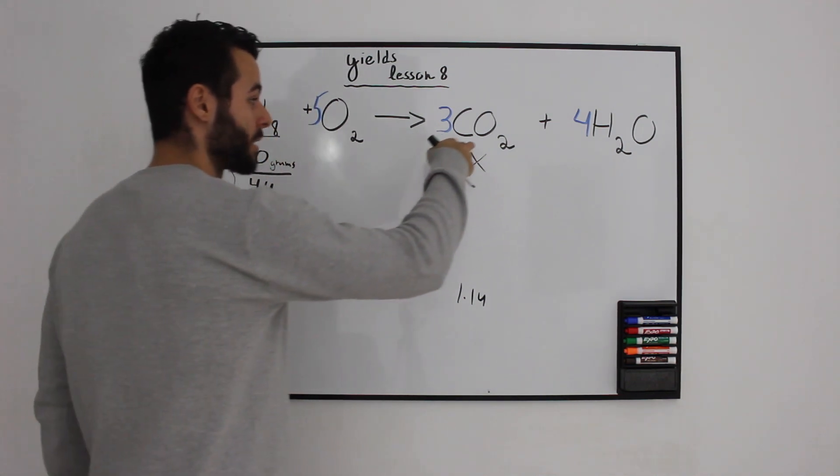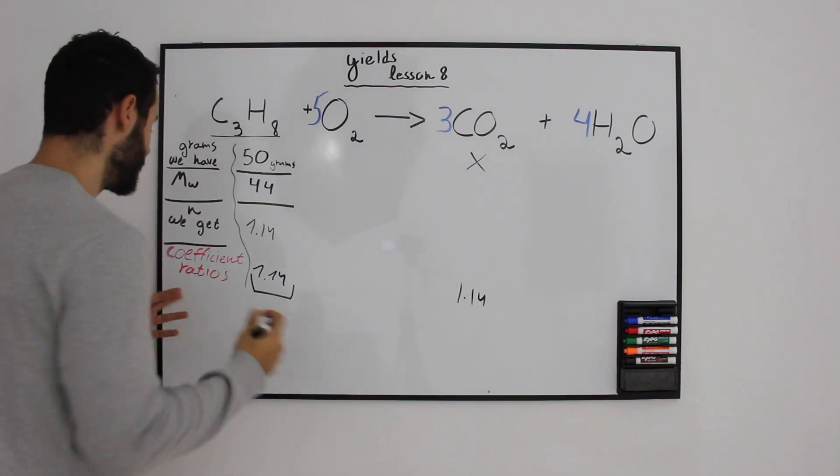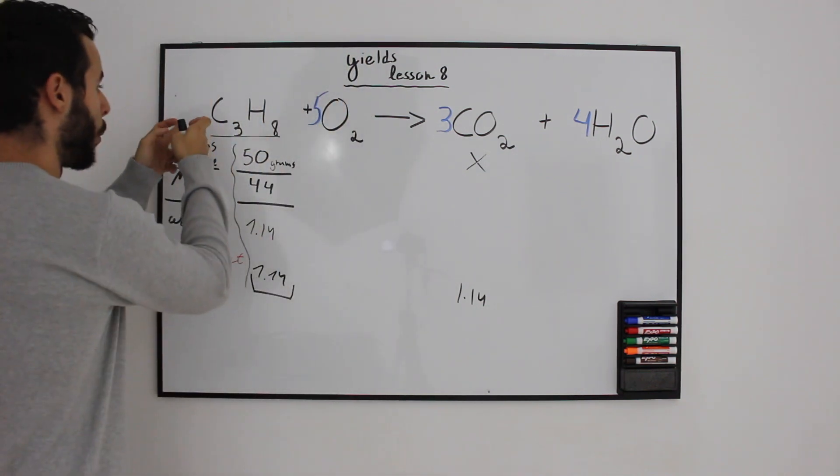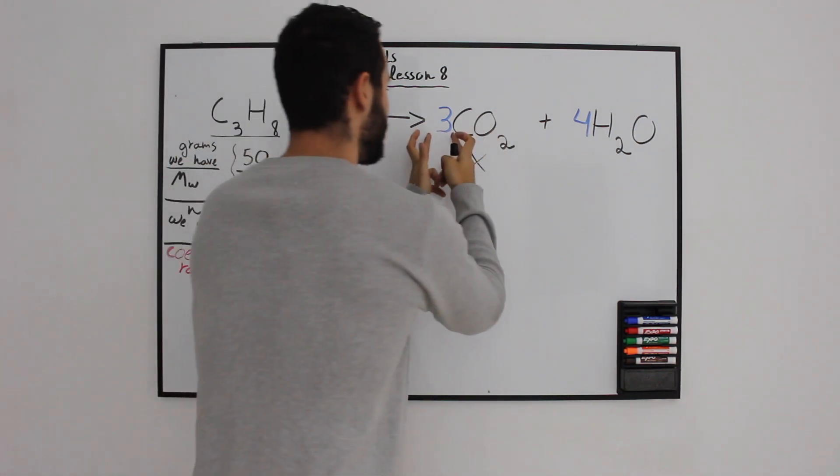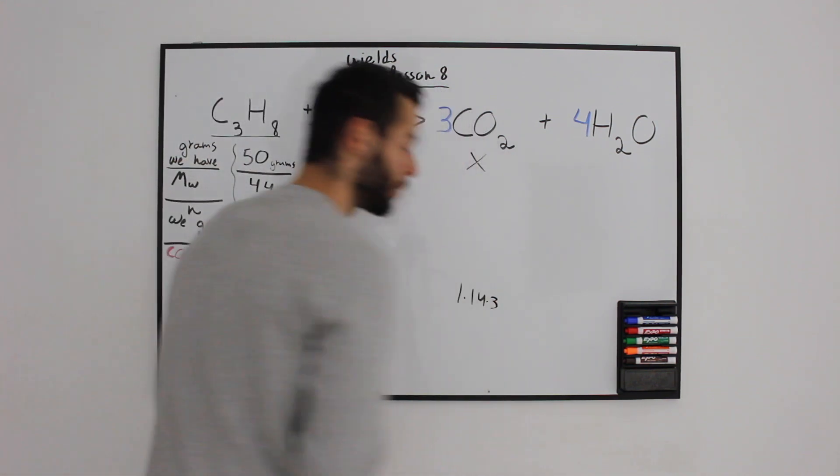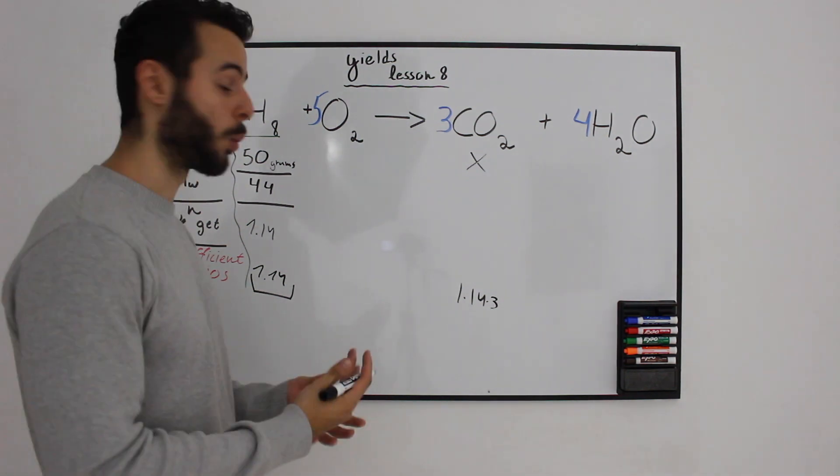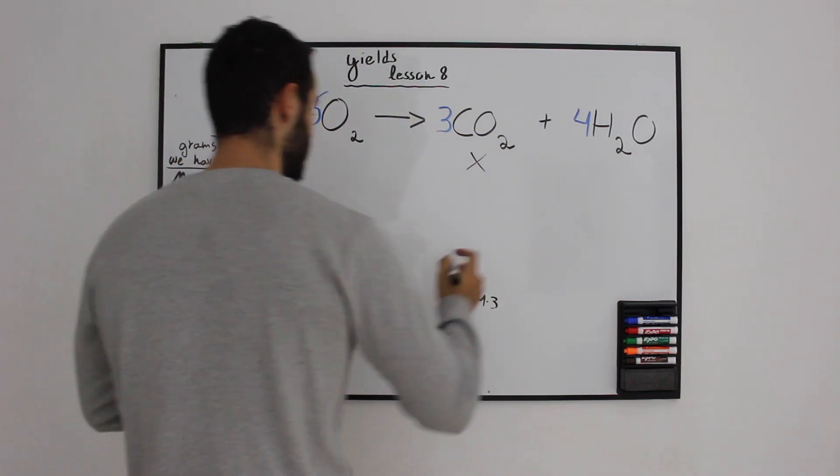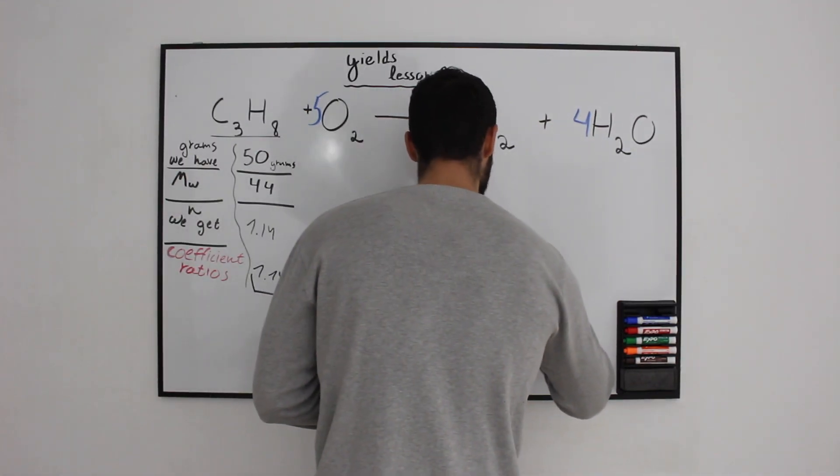Because those are the products, the coefficient ratios are 1 to 3. For one mole of propane, we get three moles of carbon dioxide, which means we multiply the coefficient ratios correctly. So 1.14 times 3 gives us 3.42 moles.